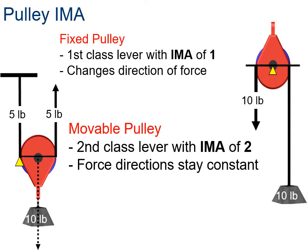There are two different types of pulleys. There's a fixed pulley that's connected to, let's say, the ceiling. The fixed pulley is a first class lever that has an IMA of one by definition, and its job is to change the direction of the force. So we pull down 10 pounds here, it pulls up 10 pounds, and it's going to have an IMA of one.